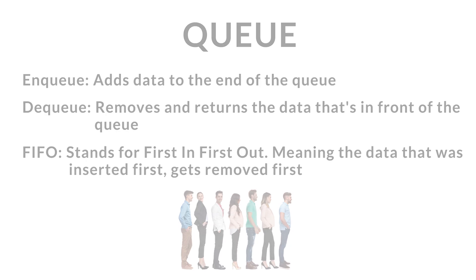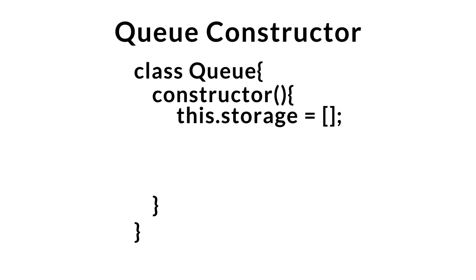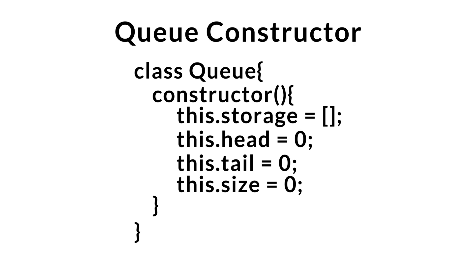Let's go over our queue constructor. First, we're going to need a place to store our data, and as I said, we'll be using an array. We need to keep track of two positions within our array. Since we add at the back of the queue and remove at the front, we'll have our head index initialized to zero and our tail initialized to zero as well — head keeping track of the front, tail keeping track of the back. We'll also initialize size to zero to track the number of elements.